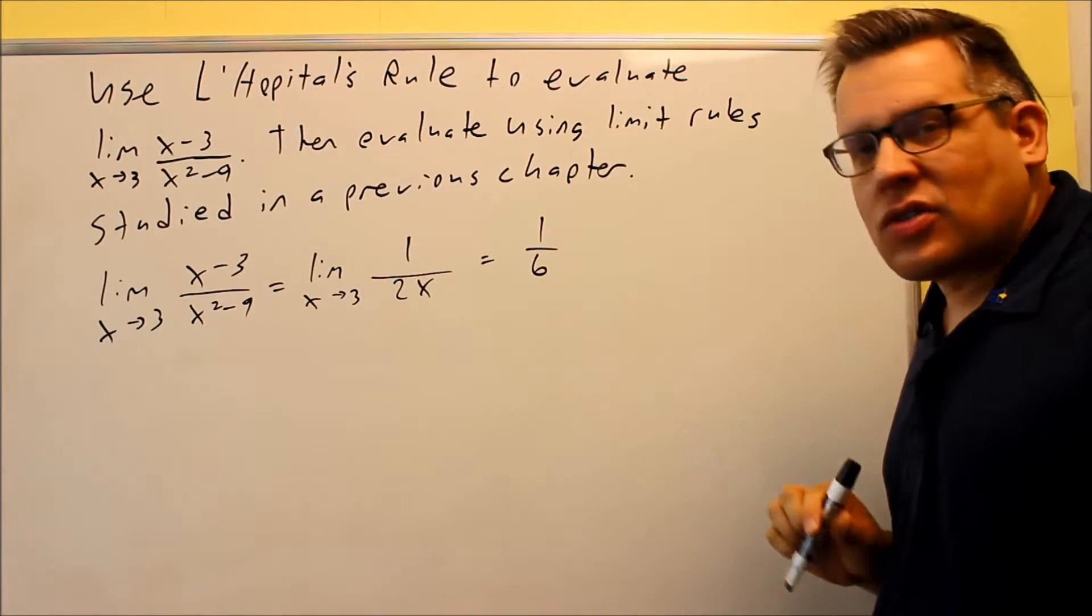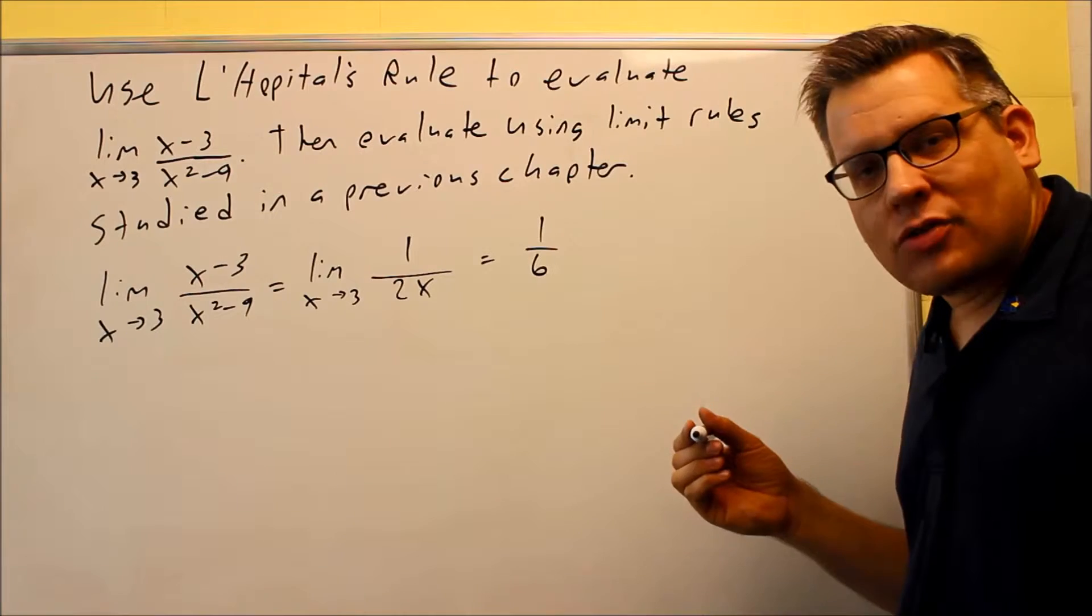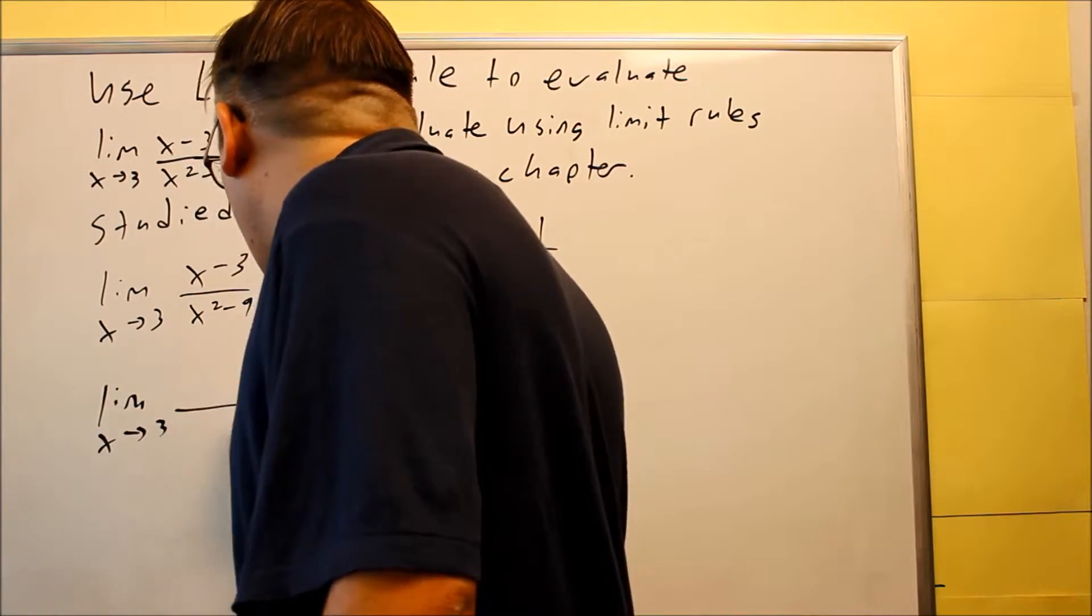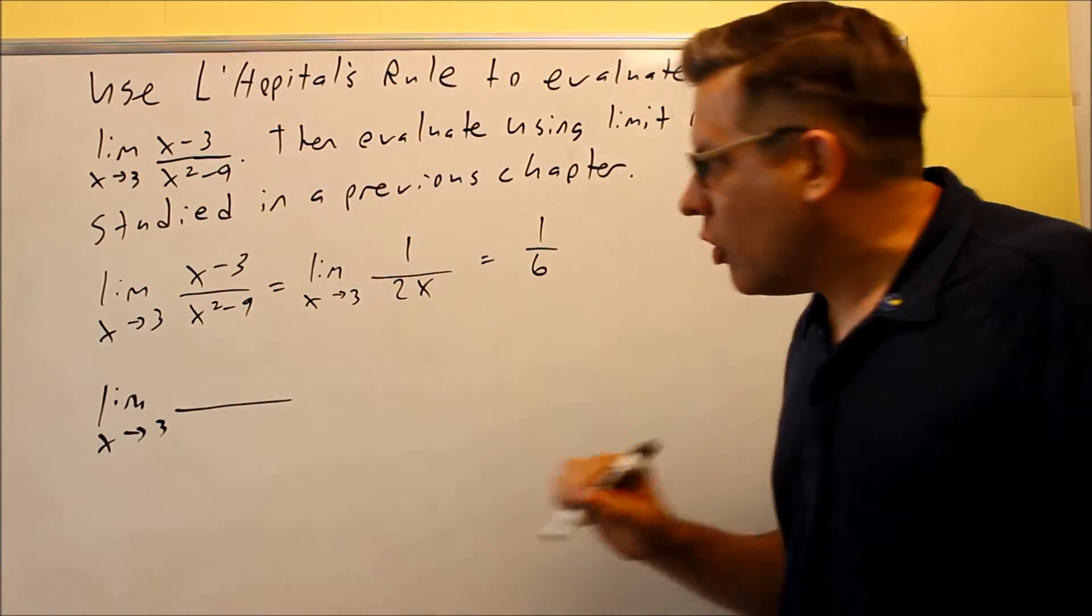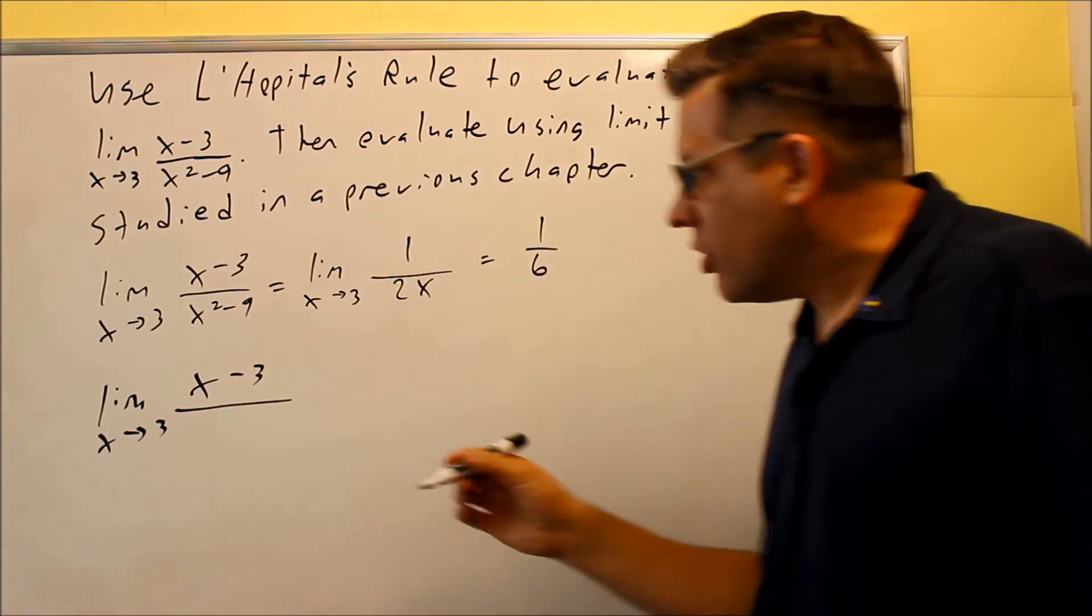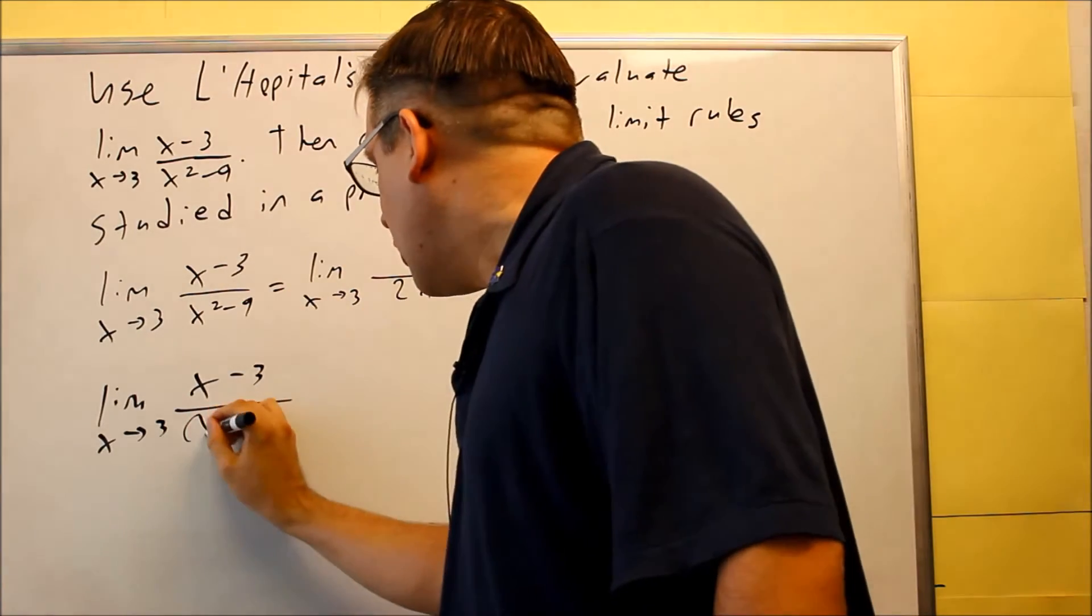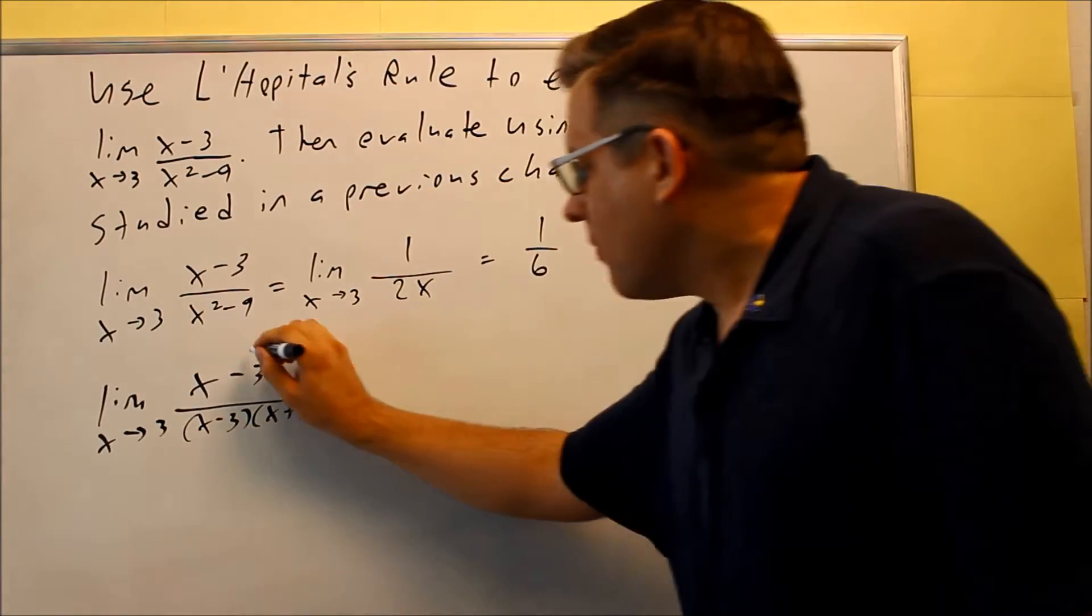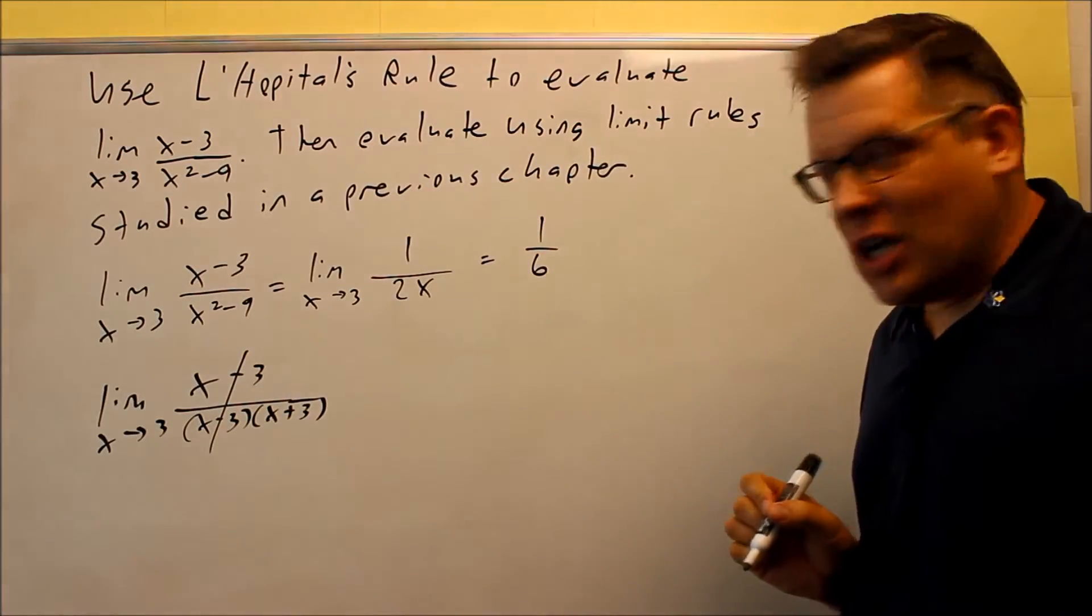They also asked us to evaluate it using the methods from the previous chapter. If I do the methods we talked about before, this is going to be a review. You can use a more algebraic approach where you factor the bottom one. You can do x minus 3, x plus 3. And then that part cancels.